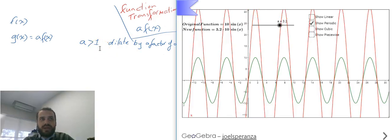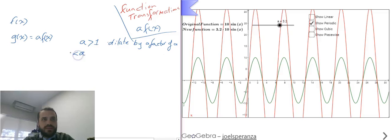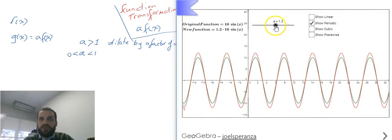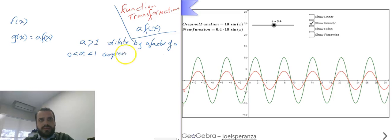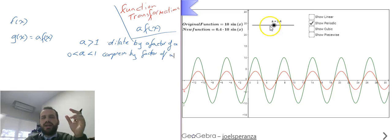So it's going to dilate by a factor of whatever a is. Now, if a is between 0 and 1, so it's a decimal, like 0.5, it's going to compress. And again, it's going to compress by a factor of a. So, if the peak was 10 and a is 0.5, I just can't quite get it there. But then it would be 5. At the moment, a is 0.4, so it's going to be 4.